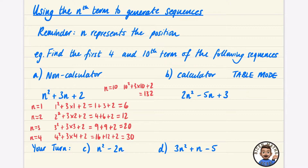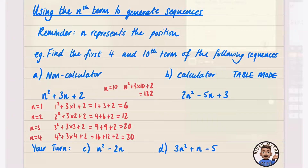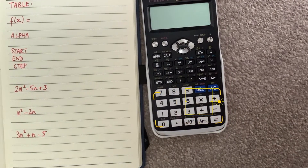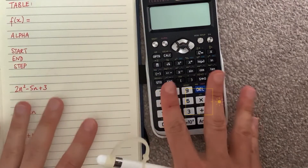Now I'm going to show you the calculator table mode for the second sequence, 2n² minus 5n plus 3, and then you're going to have a go at the remaining two. I'll confirm the answers using the calculator. I'm just going to switch to my camera so I can show you my calculator.